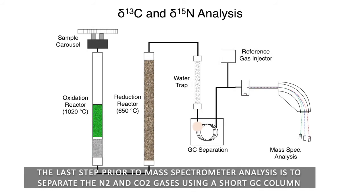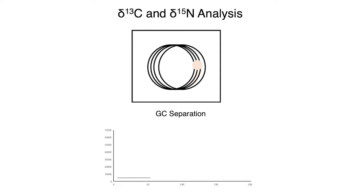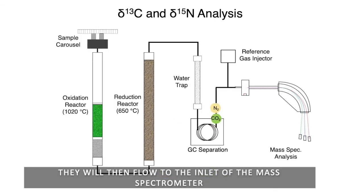The last step prior to mass spectrometer analysis is to separate the nitrogen and CO₂ gases using a short GC column. The nitrogen peak will come out first, then the CO₂ peak. They will then flow to the inlet of the mass spectrometer.